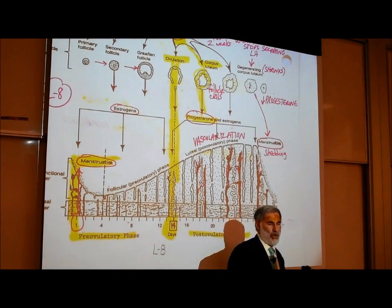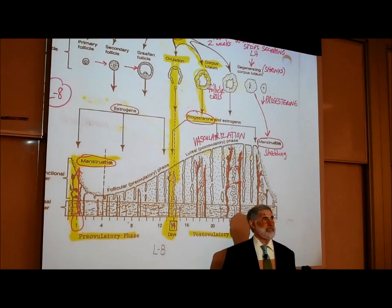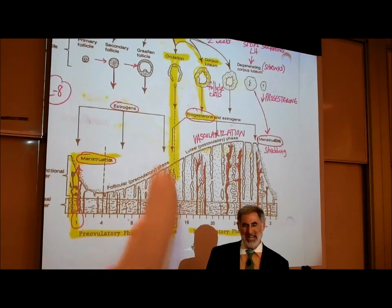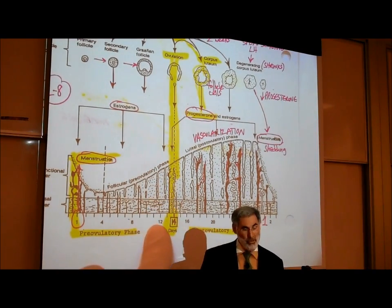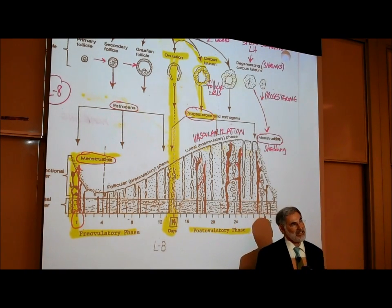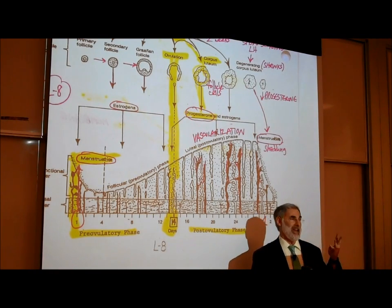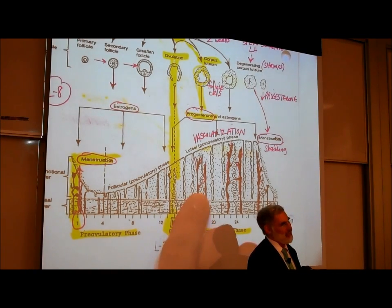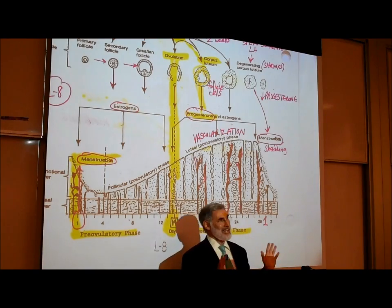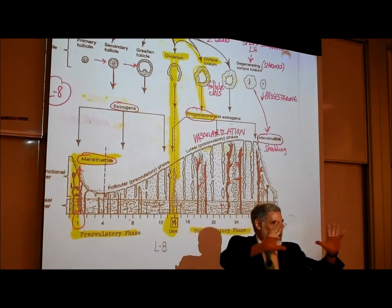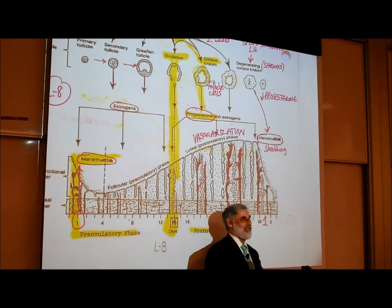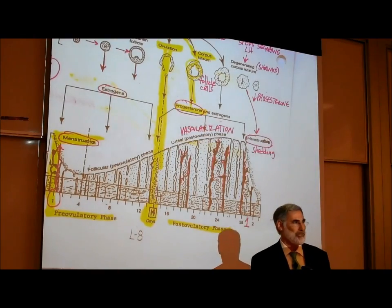Sperm can live in a woman's body for about three days. So if a couple had unprotected sex on day 12 — before ovulation — the sperm can live in her body for three days. Then she ovulates on day 14, the sperm are still there, and she can get pregnant. The further you are toward the beginning or end of the cycle, the safer it is, but it's not as practical.